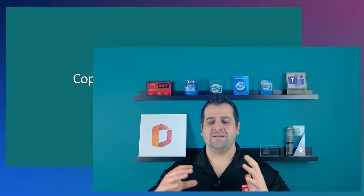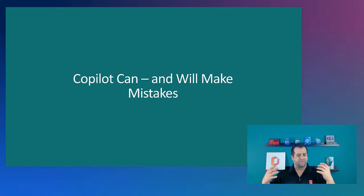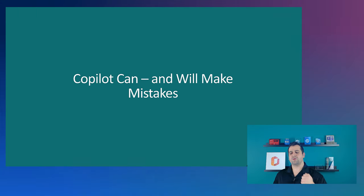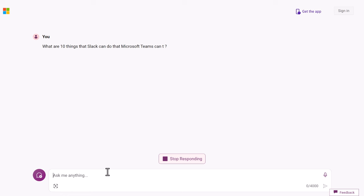Now, probably the most important tip — number five: always check for accuracy. Copilot can and will make mistakes. Copilot is not perfect because it is trained on all the data on the internet, and for Copilot to be perfect you would assume people are perfect — and we're not. There are so many things on the internet that are wrong and outdated. For example, I asked Copilot what are 10 things that Slack can do that Microsoft Teams cannot, and even from the first few answers, some of them were absolutely wrong. Is it Copilot's fault? Not really, because Copilot looks on the internet and if 10 people say Teams cannot do something, it will include that in the answer.